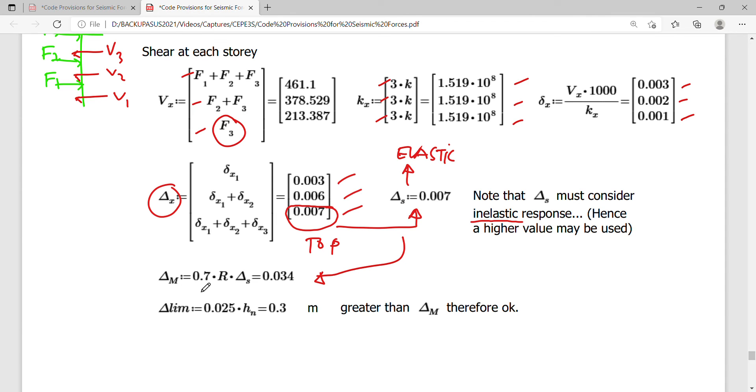This is now 0.70 R delta S. If delta S in the inelastic response is considered, then we just place the value of that delta S here. How to compute the inelastic response has a different procedure. I will explain to you in case we have time. For the delta limitation, the formula is 0.025 of HN.